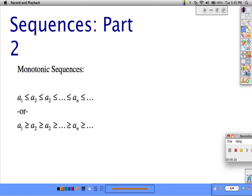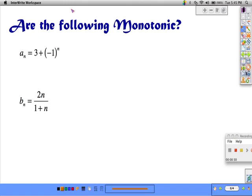So here are two sequence rules. I want to know are they monotonic? And if we look at the first one and we write out the terms for a sub n, this is equal to 3 plus negative 1 to the first or 2.